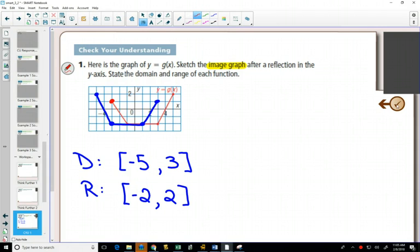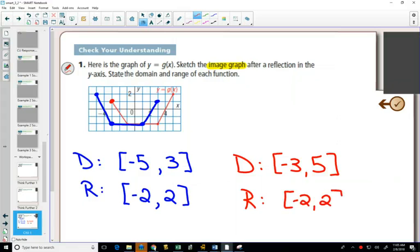On our original graph in red, so I'll switch to a red pen here, the smallest x value on our red graph is negative 3. Our largest value on our x graph, positive 5. Our range still goes from negative 2 to 2.